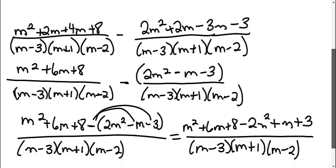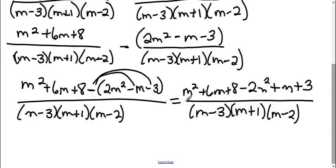Okay, then I'm going to combine my terms here. I have an M squared and a negative 2M squared gives me a negative 1M squared. I have a 6M and a 1M gives me 7M. And an 8 and a 3 gives me 11.